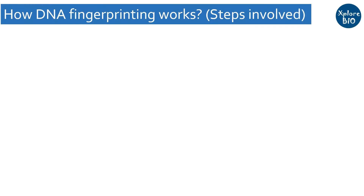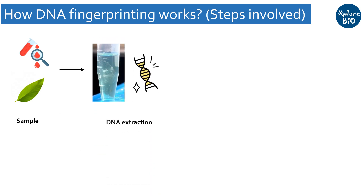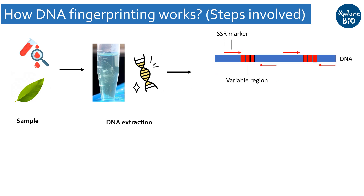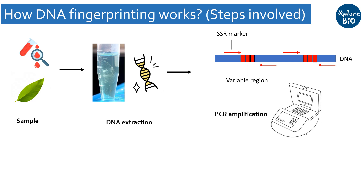Now let's see how DNA Fingerprinting is done and how the technique actually works. First, the DNA of the individuals or samples to be studied is extracted. Next, using specific genetic markers such as short sequence tags, SSRs, or any other suitable marker type, PCR of individual DNA is performed in a thermocycler to amplify the DNA regions. The target region amplified using primers is usually a variable or hypervariable region of the genome, such as short tandem repeats, where the chances of finding variation are very high.